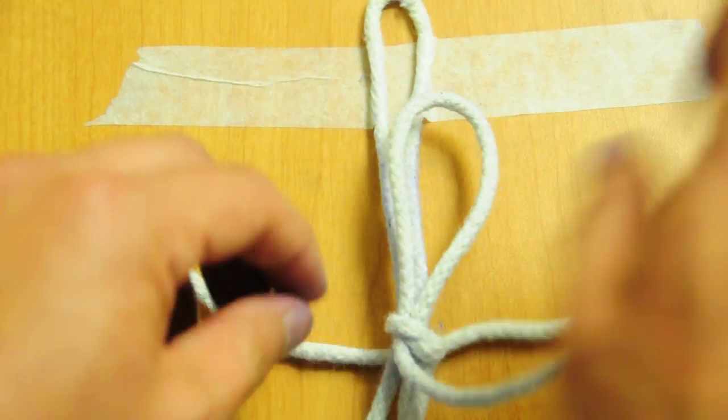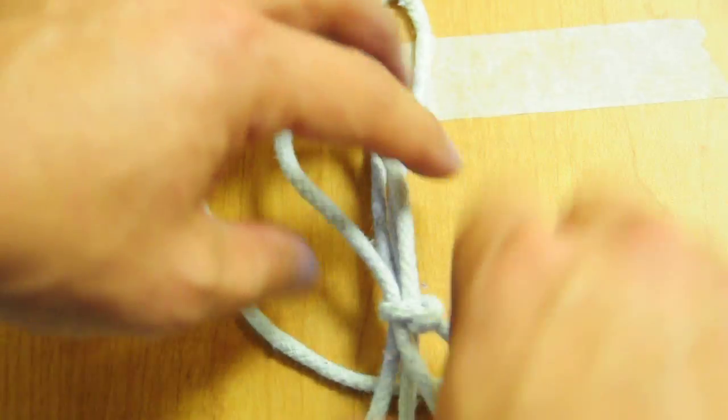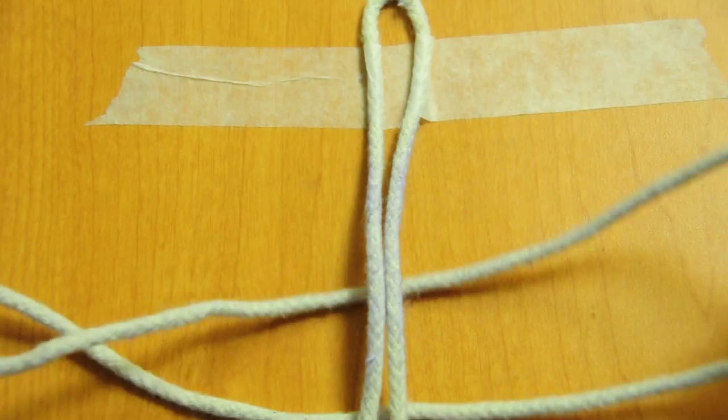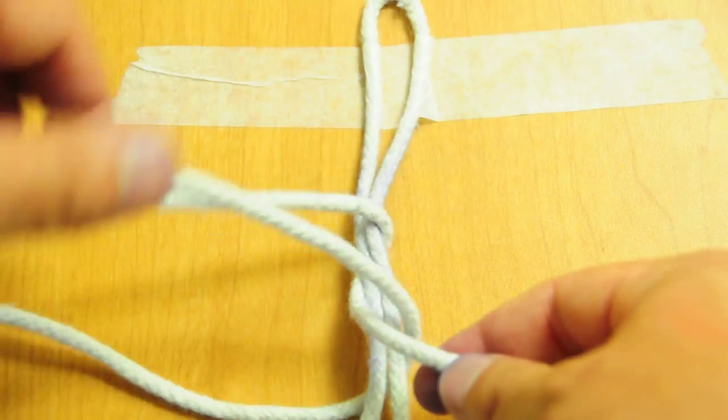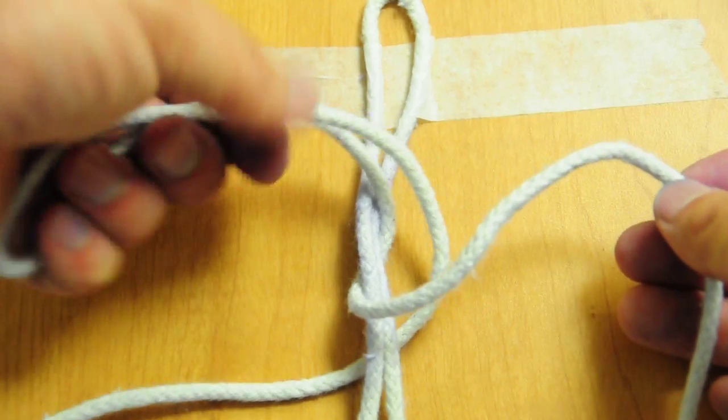So when you can, try to remember to tie with the free end. Number one, try to avoid surgeon's knots with a loop. Number two, always tie with the free end, which is this one. Keep the loop here.